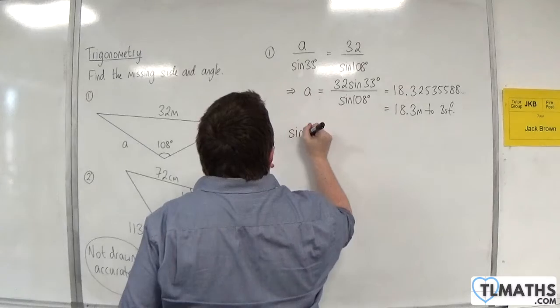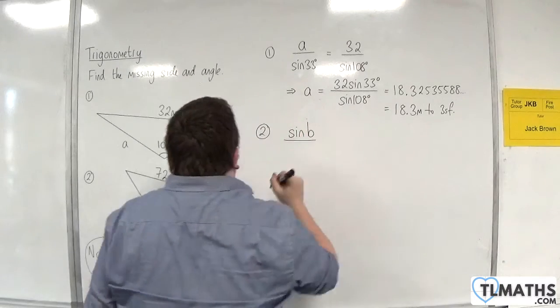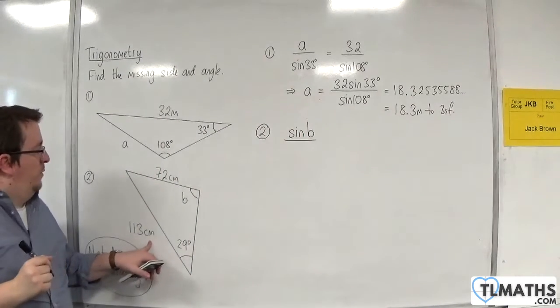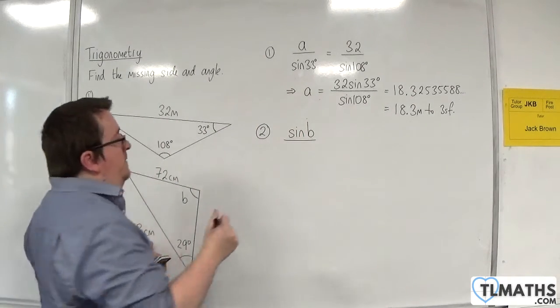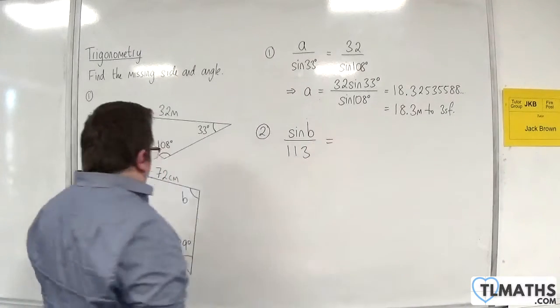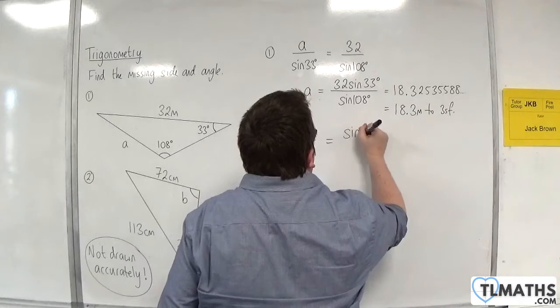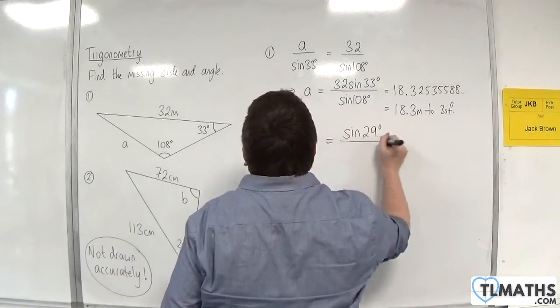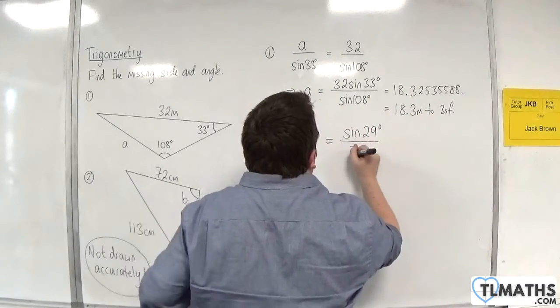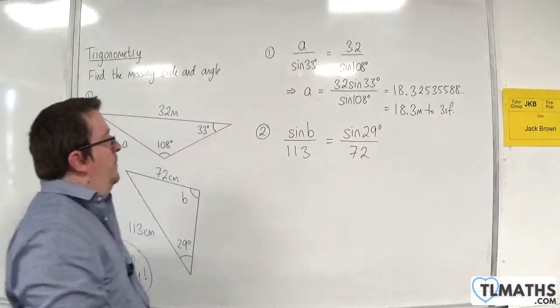This time, sine of b over 113 is going to be equal to sine of 29 degrees over 72.